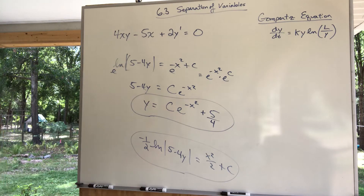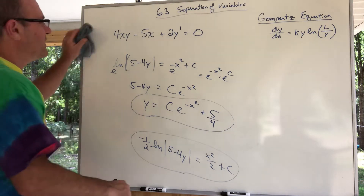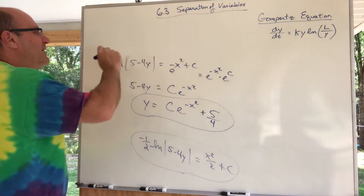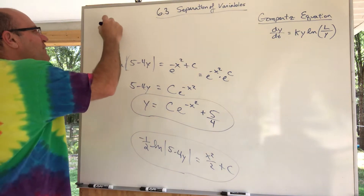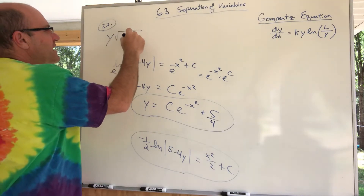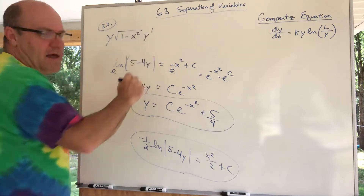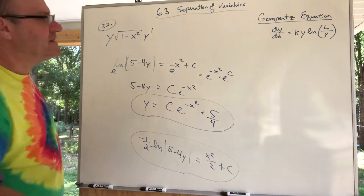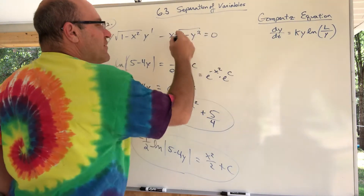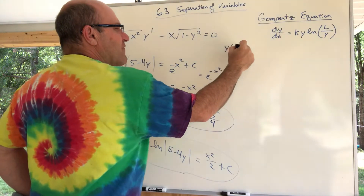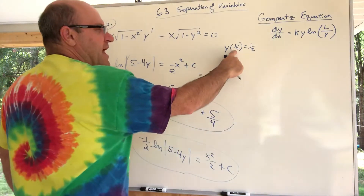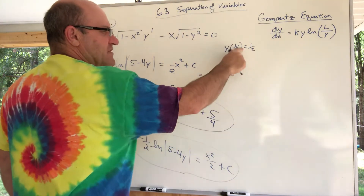Now I want to do another one from the book — problem number 22 in section 6.3. I also want to tell you about the Gompertz equation — we'll get there in a minute. Problem 22 is: y times square root of (1 minus x squared) times y prime minus x times square root of (1 minus y squared) equals 0. There is an initial condition: y(1/2) equals 1/2, meaning when x is 1/2, the y value is 1/2.